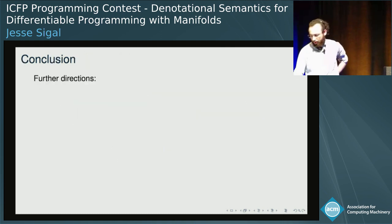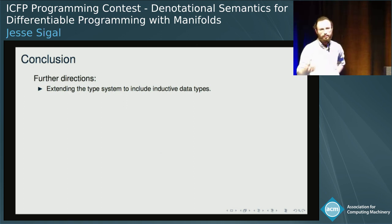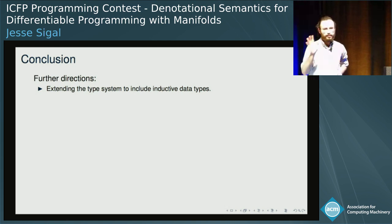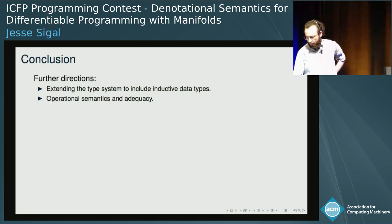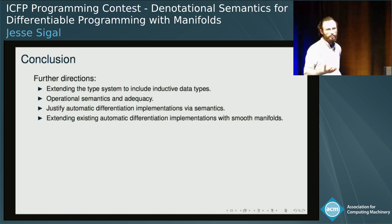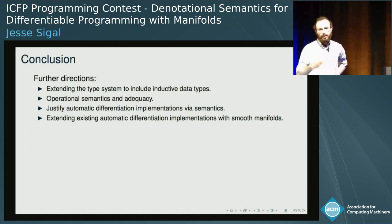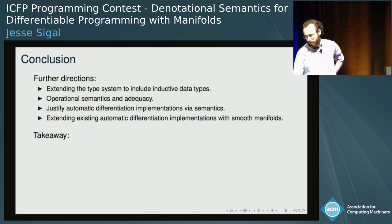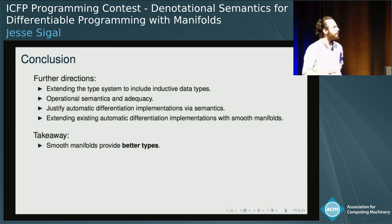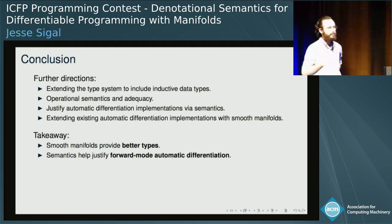Some further directions this work can take: we can extend the type system to include inductive data types, which have to be locally finite-dimensional — so lists are locally finite, but infinite lists and streams would be out. Operational semantics and adequacy would be quite interesting, especially because they would help relate to automatic differentiation implementations. The main two takeaways are that smooth manifolds provide better types for differentiable programming, and we can use the semantics to help justify various automatic differentiation algorithms.